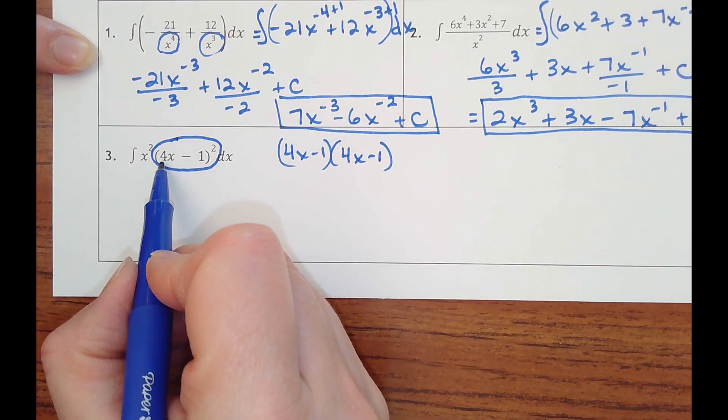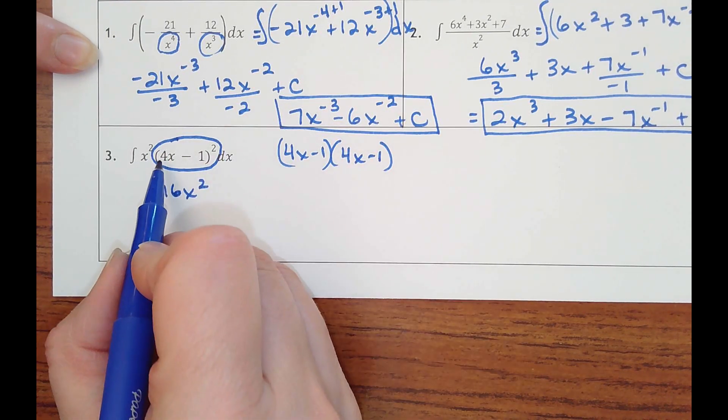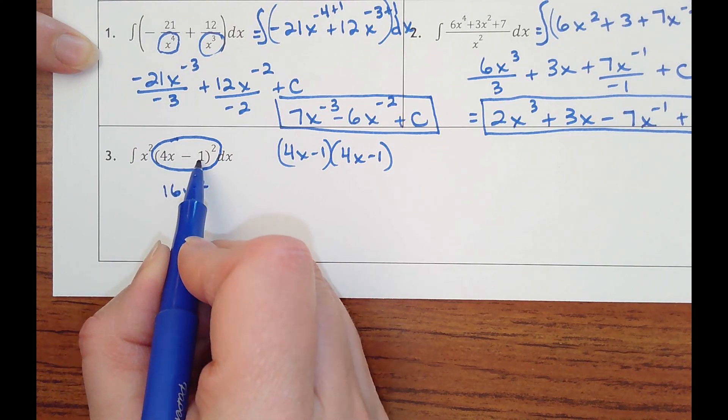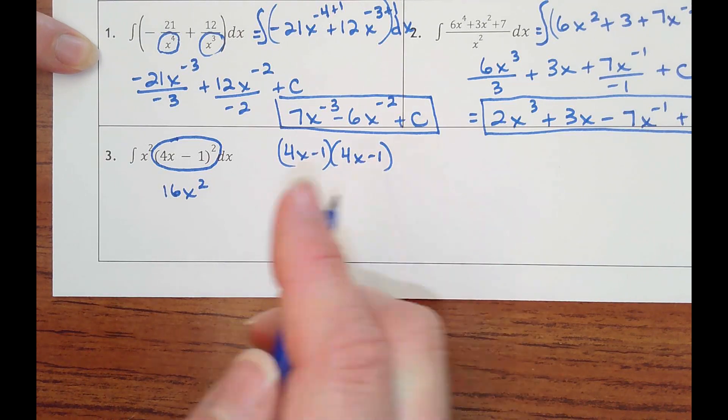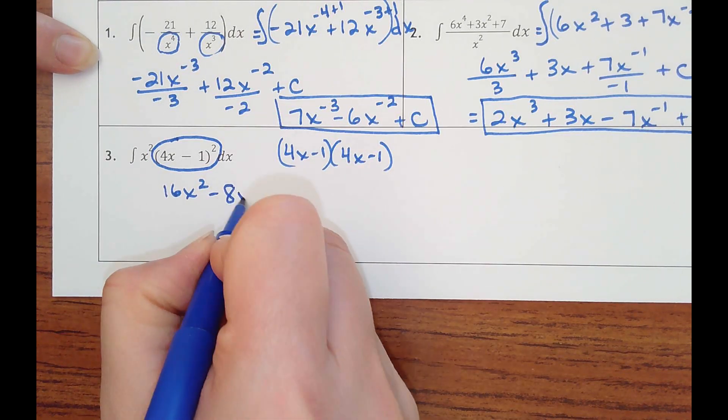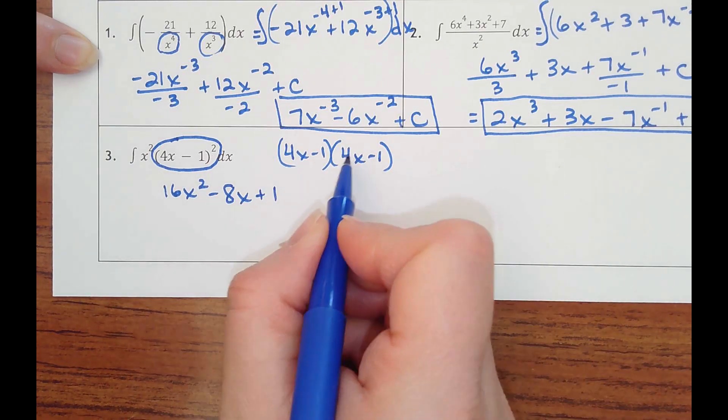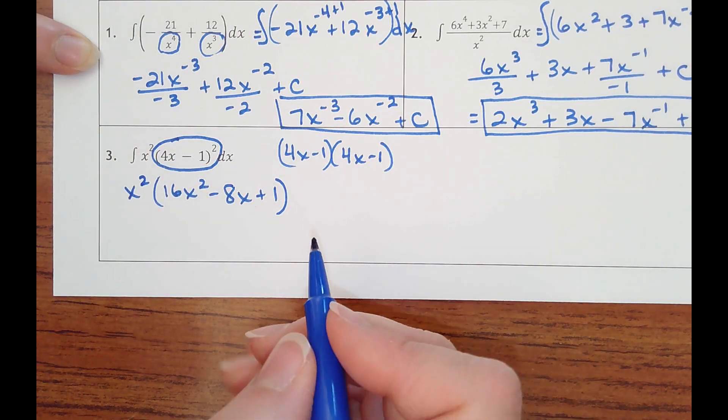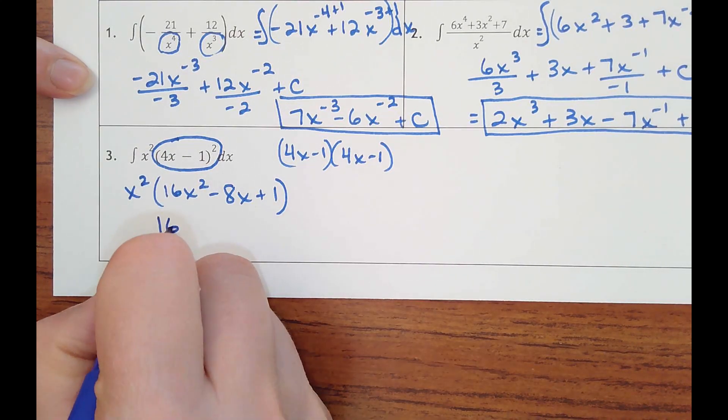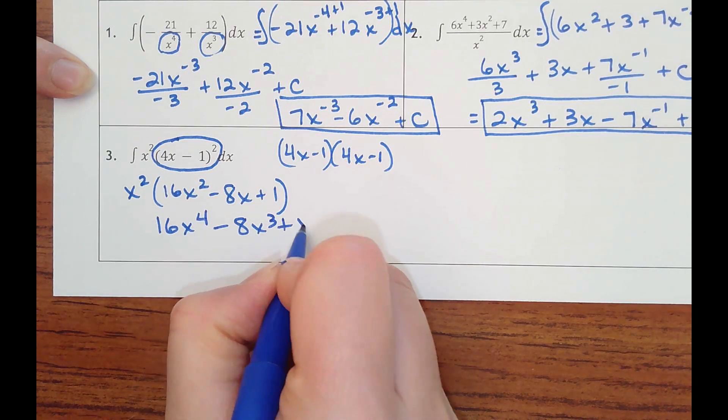And so I kind of do this in my head, where I know this first term gets squared. 4x times 4x would be 16x squared. I multiply these two terms on the inside. Negative 1 times 4x would be a negative 4x. You can see it's happening here. Then it's going to have a negative 4x, so I double it. It'd be negative 8x. And then negative 1 squared is actually positive 1. So whatever you need to do. But then that all needs to get multiplied by x squared. So I would get 16x to the 4th, minus 8x cubed, plus x squared.